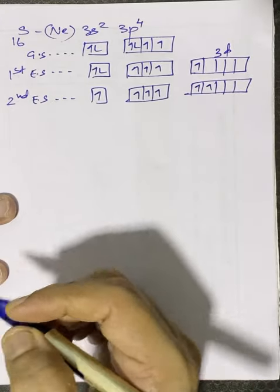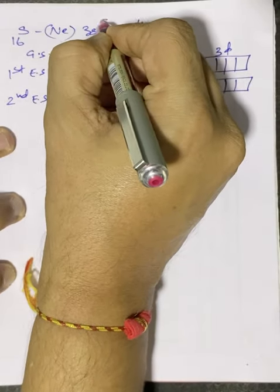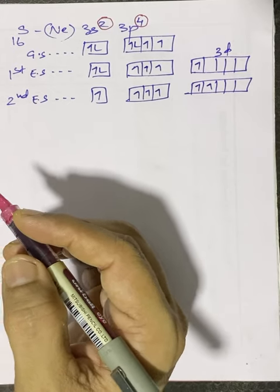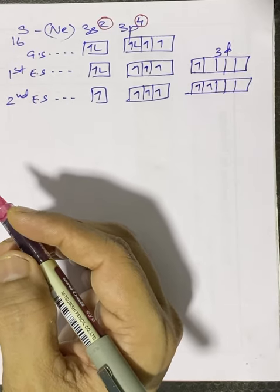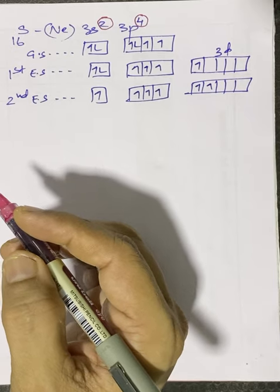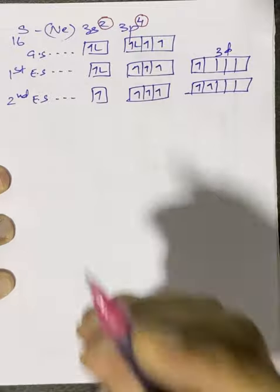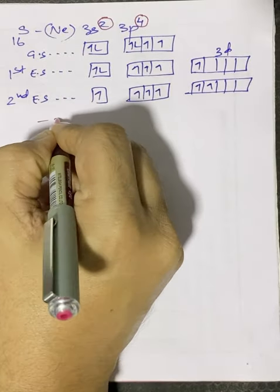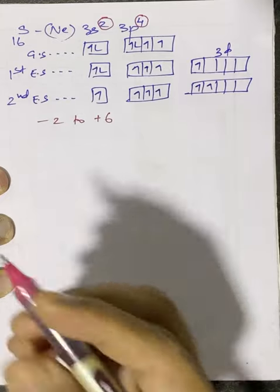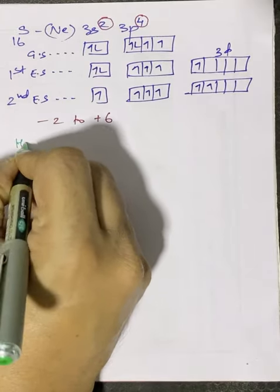If sulfur loses 2+4=6 electrons, the maximum oxidation state can be +6. Since there are 6 electrons and it can gain 2, the oxidation state can be as low as −2. So the oxidation state of sulfur ranges from −2 to +6. Now we have three types of acid prefixes to discuss: hypo, pyro, and thio.